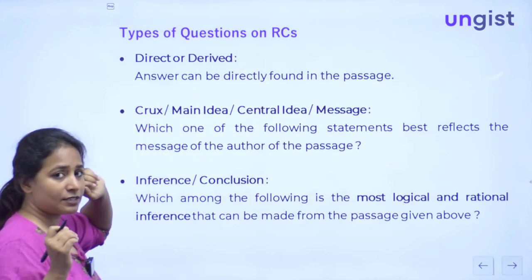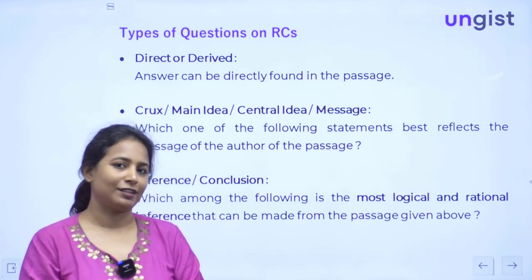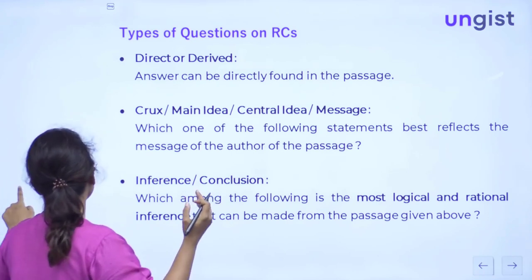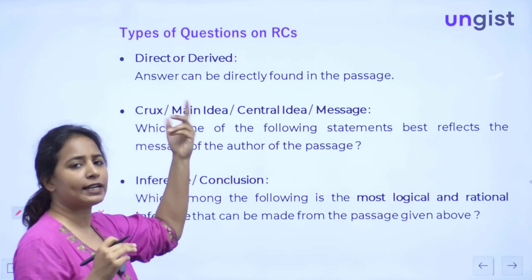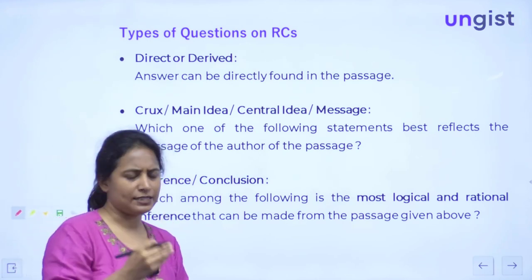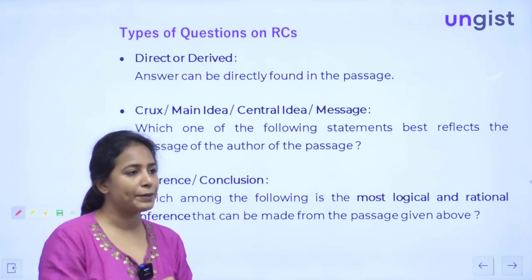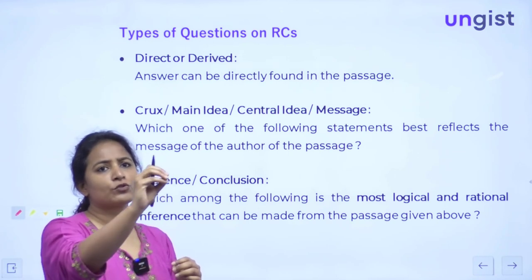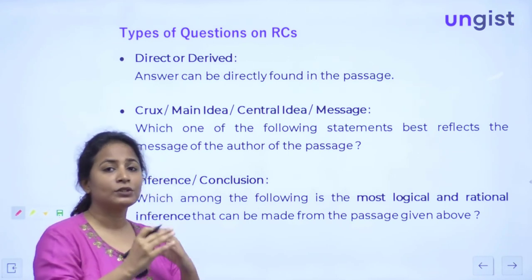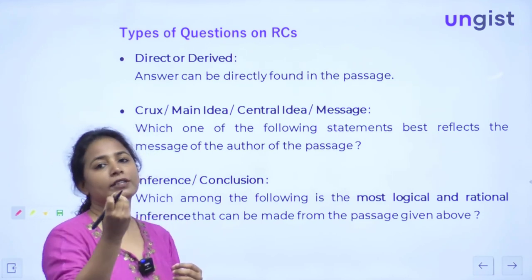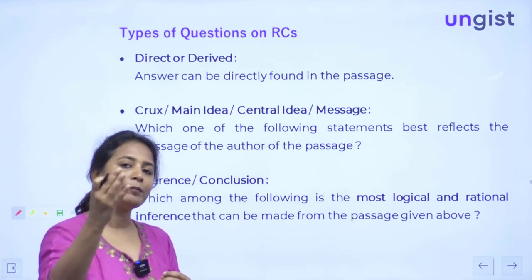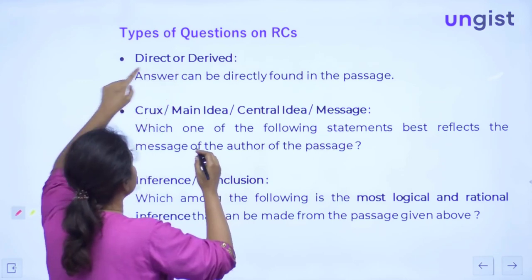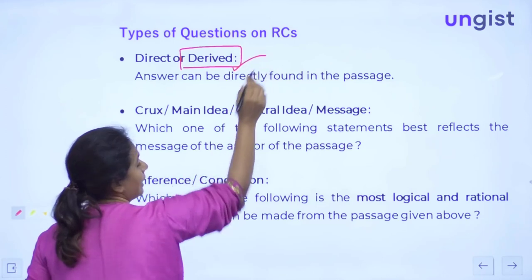Once we have discussed the types of passages, the main thing comes: the types of questions. There are different types of questions that come in RC. One type is a direct question — a question directly about any information in the passage. For example, if a passage describes an animal that lives in the jungle, has stripes, and certain government programs are running for it, you can identify it as a tiger using your prior knowledge, even though 'tiger' is never written in the passage. You derive and answer.